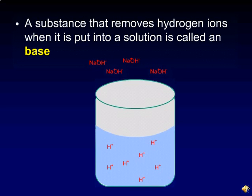Any substance that removes hydrogen ions when it is put into a solution is called a base. For example, sodium hydroxide dissociates into sodium ions and hydroxyl ions when put into solution. We'll remove the sodium ions just to make it easier to see what's going on. Notice that the hydroxyl ions can combine with hydrogen ions to form H2O, or water, thereby effectively removing hydrogen ions from the solution and making it more basic.